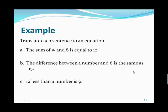Let's do some practice of translating sentences to equations. If we have the first one, the sum of w and 8 is equal to 12, we see the phrase is equal to. We have the sum of w and 8 on the left hand side or on one side and the equal sign, 12 is the simple expression on the right side.